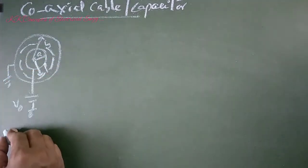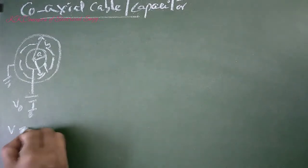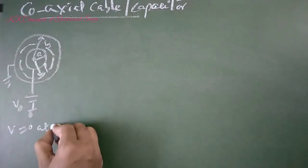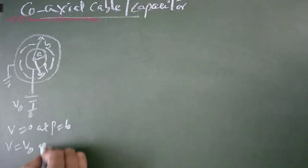So boundary conditions for this are: V equals 0 at ρ equals B, and V equals V₀ at ρ equals A.